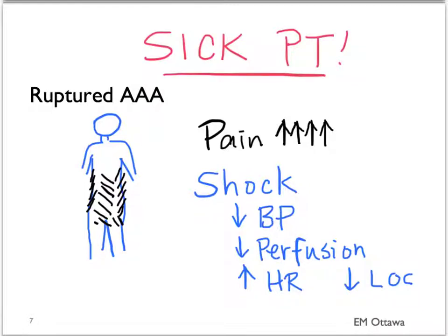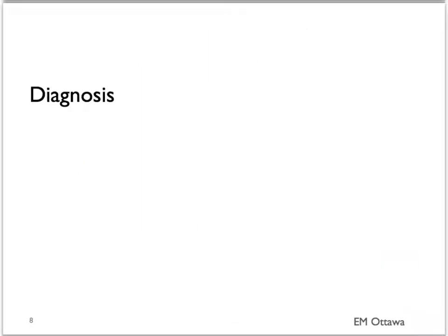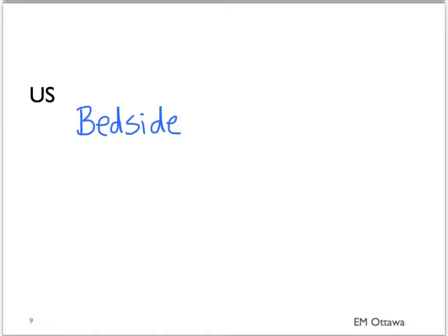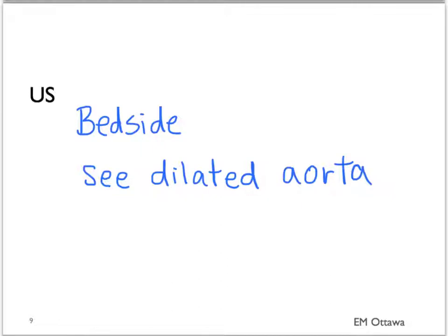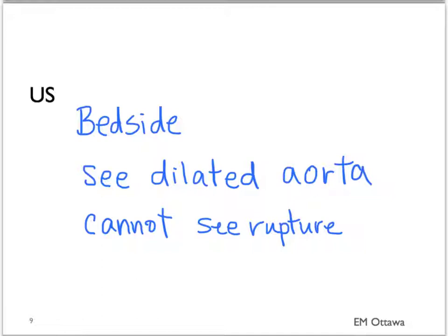We diagnose AAA by diagnostic imaging — we'll talk about ultrasound and CT. Ultrasound can be done at the bedside. It is useful for diagnosing the dilated aorta and finding where the aneurysm might be. However, on ultrasound we cannot tell whether the AAA has ruptured or not, because when an AAA ruptures it tends to go into the retroperitoneal space and therefore cannot be picked up by bedside ultrasound.